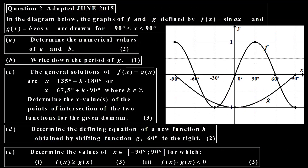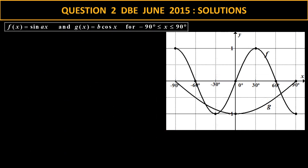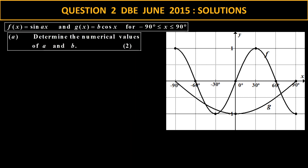Now let's consider the second question, adapted from the June 2015 paper. There is the given graph with a domain from negative 90 to 90. We want to determine the numerical values of a and b. For a — that's part of f(ax) — I need to know the period of f. Looking at the f curve, the period is 120. So the a value would be the default 360 divided by 120, which is 3. So a equals 3.